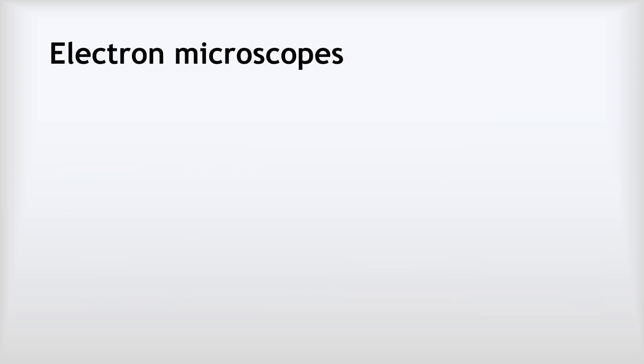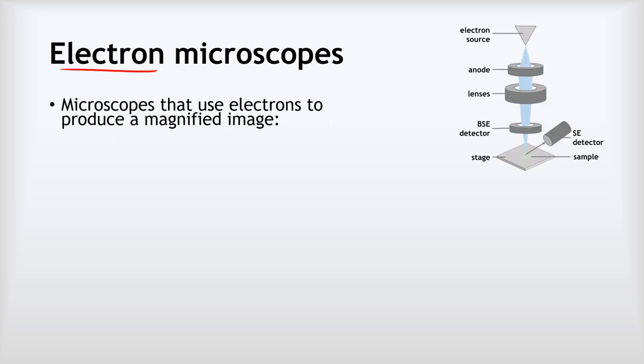So the solution to the low resolution and the low magnification of a light microscope is the electron microscope. Electron microscopes use electrons to produce a magnified image. You do not need the detail but it looks something like this. So there's an electron source, the beam of electrons passes through a couple of lenses and it hits the sample and reflects off the sample and gets collected by a couple of different detectors. You won't be asked the details but it's helpful to have a basic idea of what electron microscopes do.